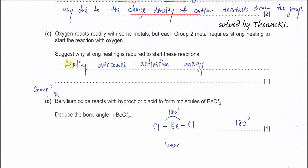Part C: oxygen reacts readily with some metals, but each Group 2 metal requires strong heating to start the reaction with oxygen. The heating involves overcoming a high activation energy. The heat provided is to overcome this activation energy, and once it is overcome, the reaction will start.